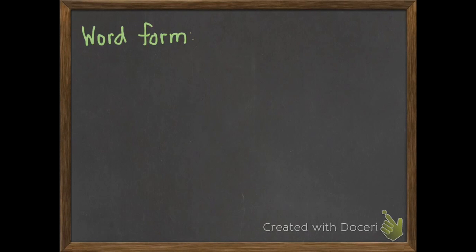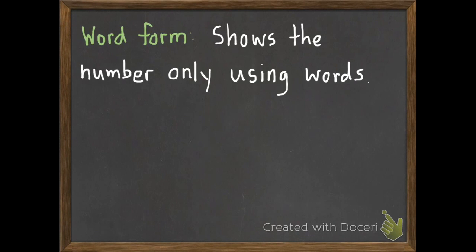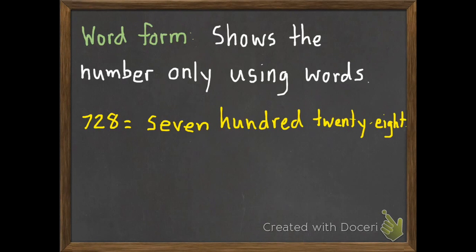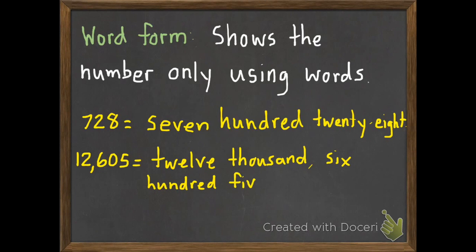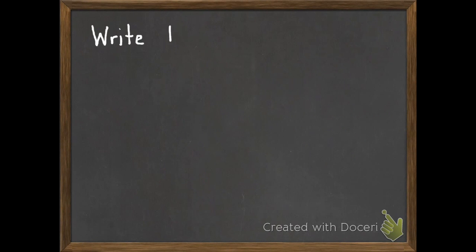Last of all, for vocabulary, we have word form. Word form shows the number only using words, so no digits at all. If I had 728 in standard form, and I wanted to change it to word form, I would write 728. You write it just the way that you say it. If I had 12,605, I would write that: 12,605.